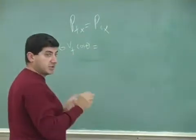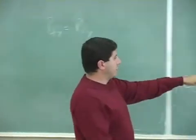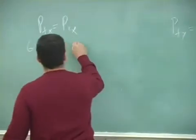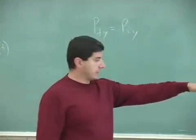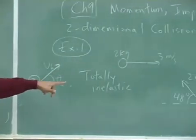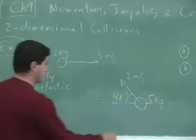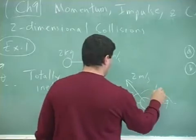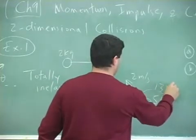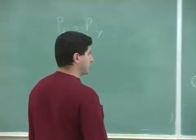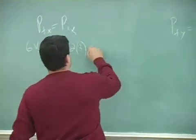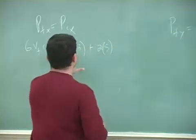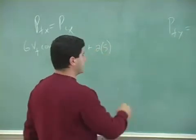The initial X momentum comes from both objects. The 2 kilogram object contributes 2 × 3 = 6 kg·m/s in the positive X direction. The 5 kilogram object contributes 5 × 2 × cosine(132°), because its true angle measured from the positive X-axis is 132 degrees. So P_initial_X = 6 + 10 × cos(132°).